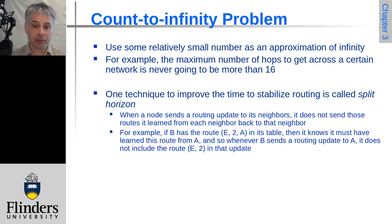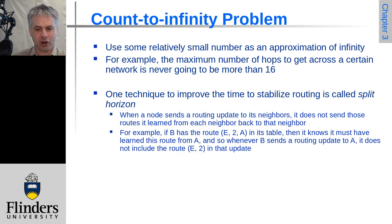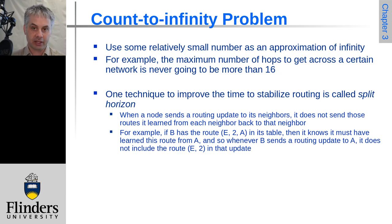Let's have a look at this count-to-infinity problem. There are a few ways we can try to manage it. One is to have a very small approximation of infinity — whatever we estimate to be the maximum real number of hops in the network, maybe 16, 20, 30, 40, or 50. It's typically not going to need to be more than that, and so that will limit the time it takes until the nodes realize there is no path to get to the node.